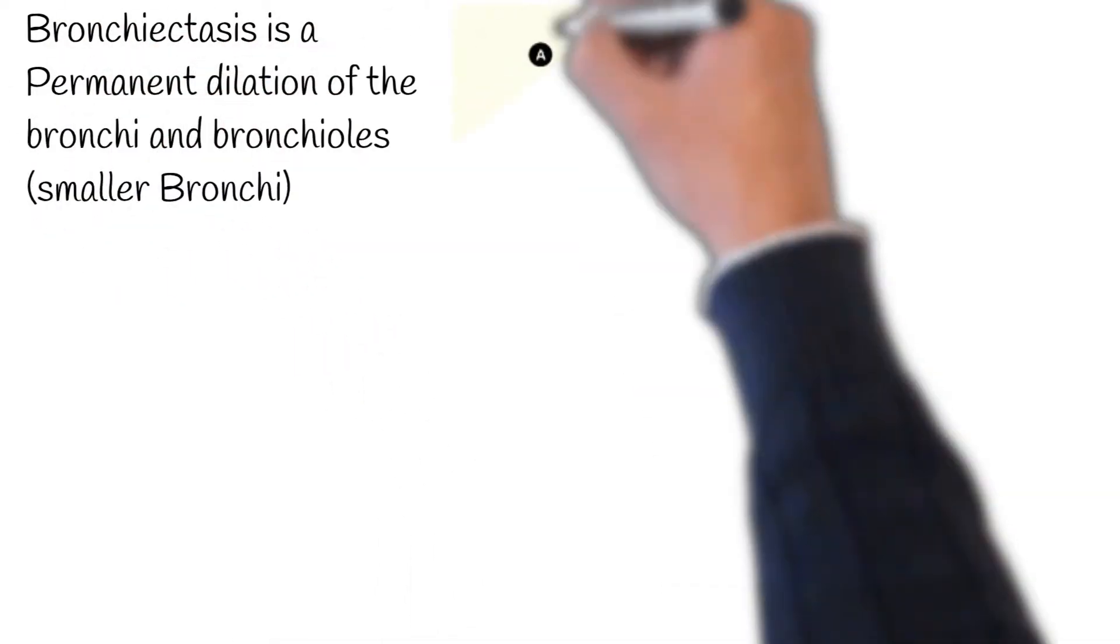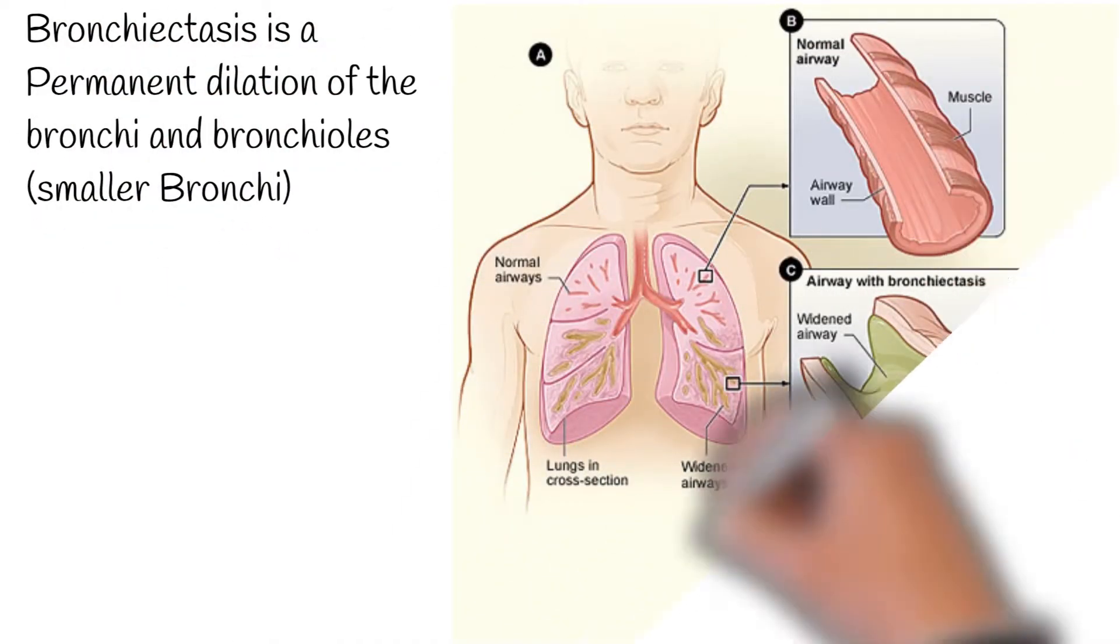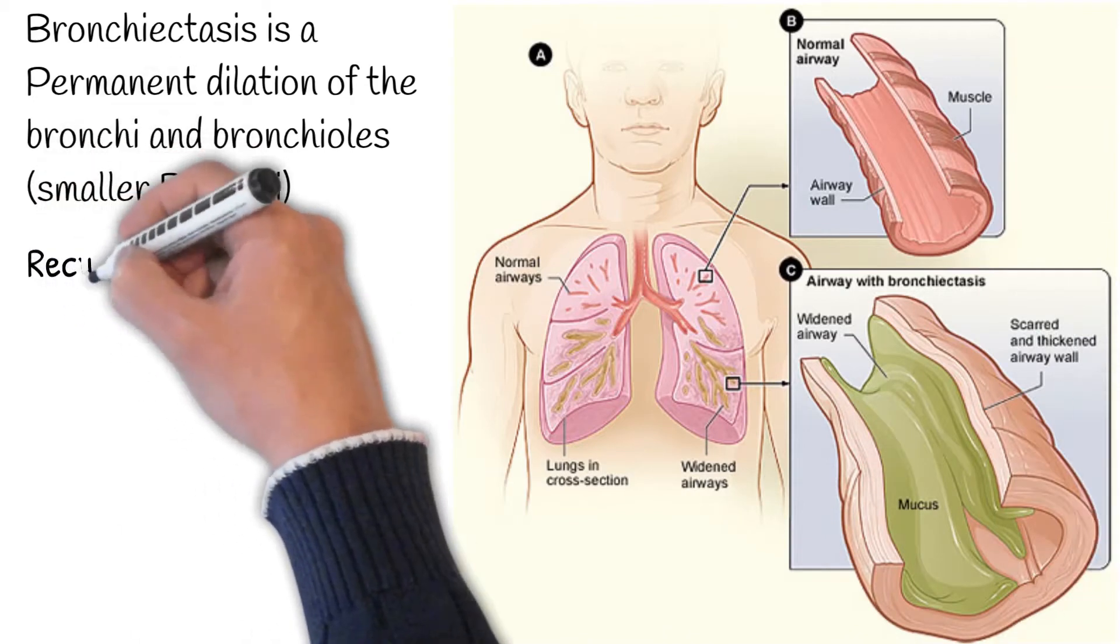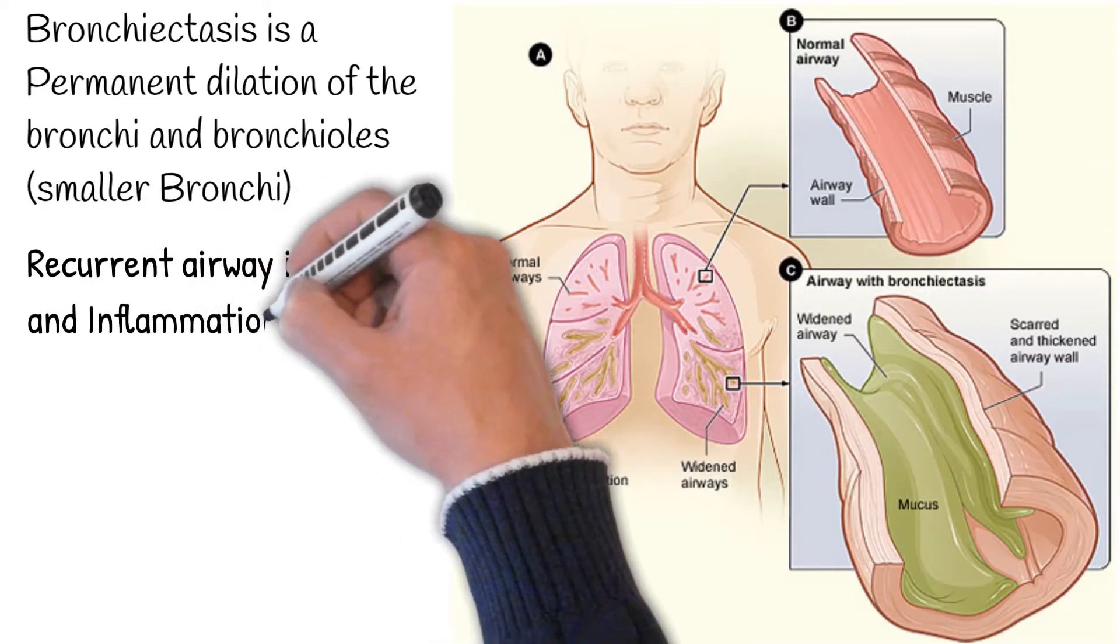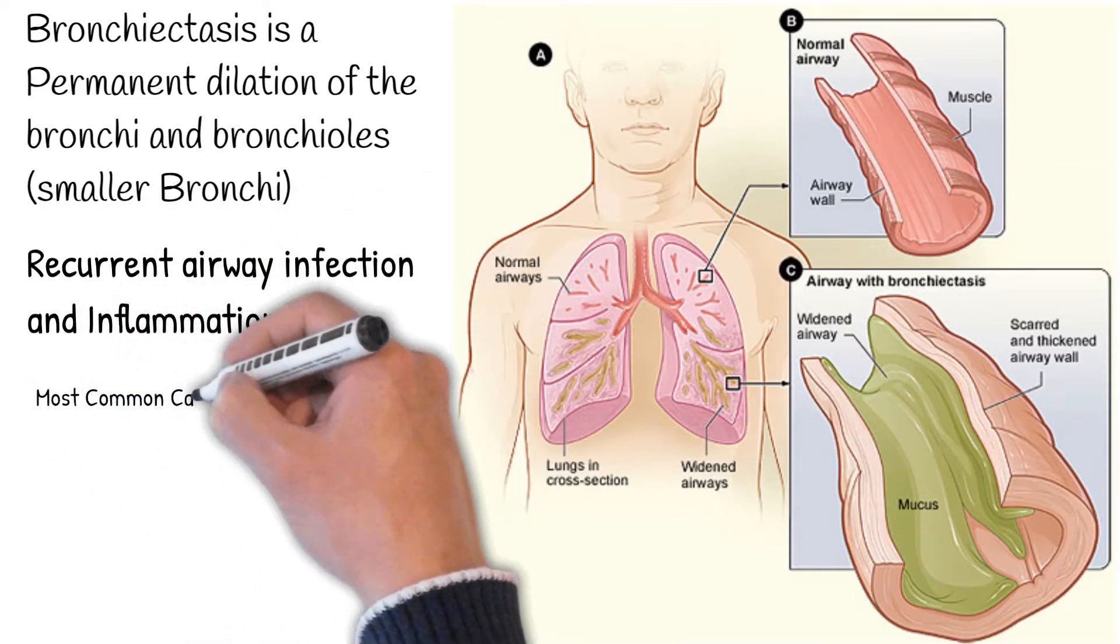Bronchiectasis is a permanent dilation of the bronchi and bronchioles, secondary to the destruction of its cartilage and elastic tissue. It is caused by recurrent airway infection and inflammation.